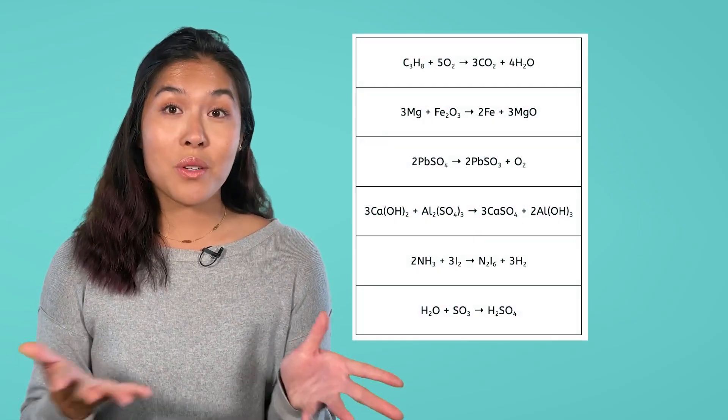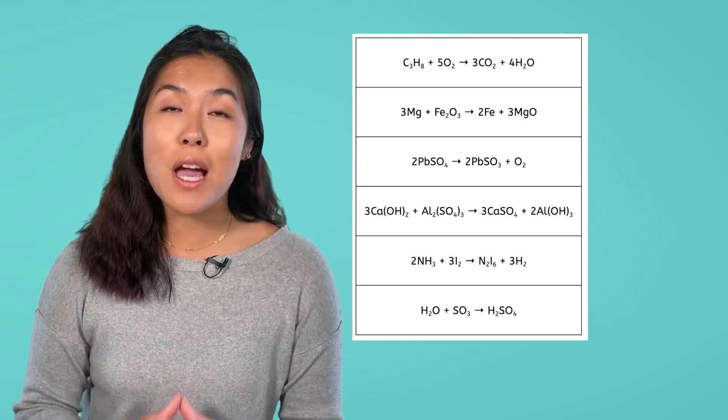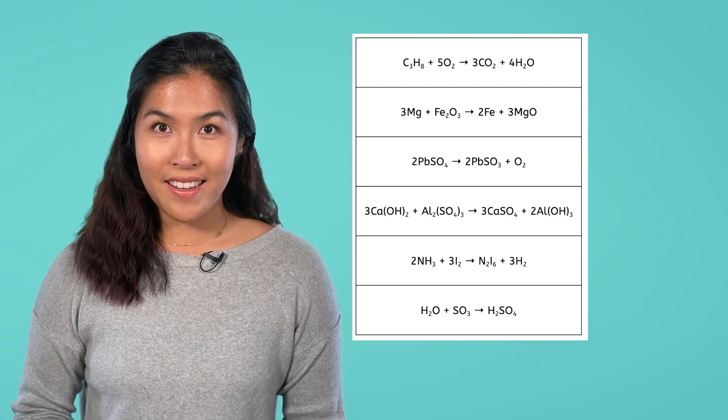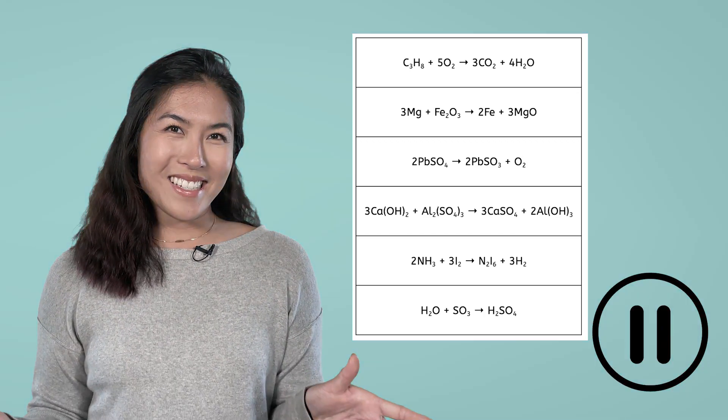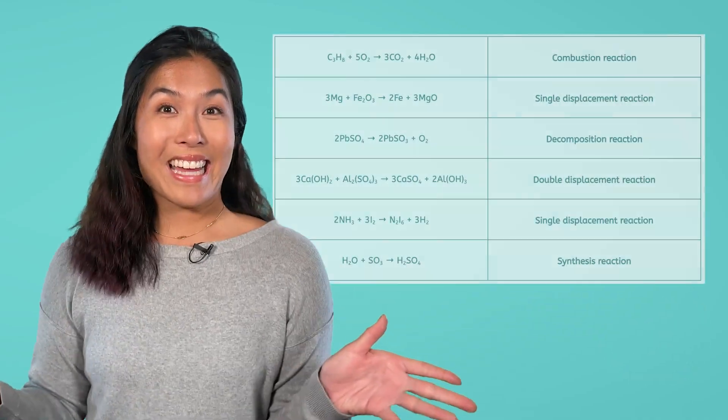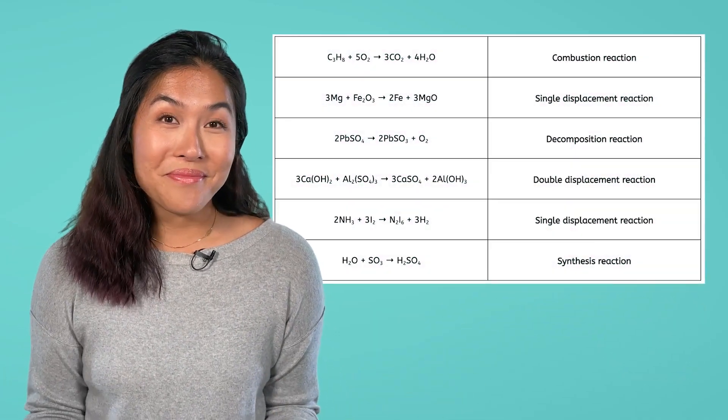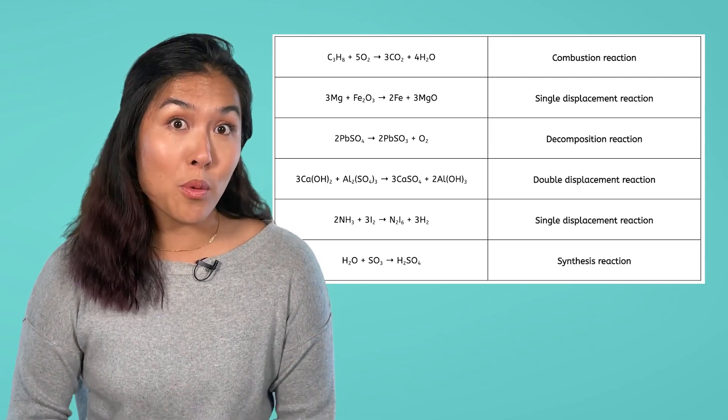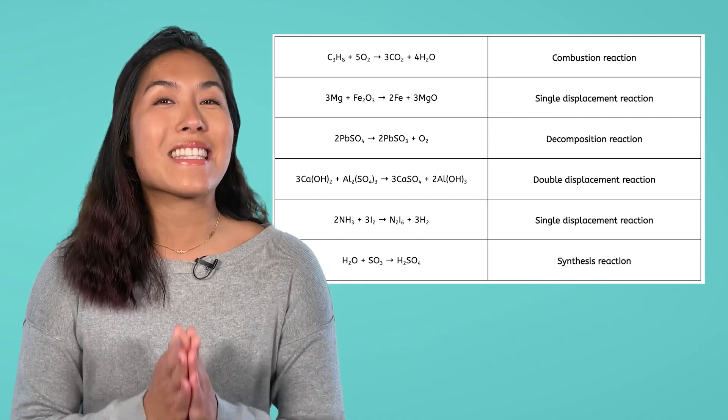Let's spend a few minutes practicing identifying the types of reactions. Look at these examples, which are also in your lesson PDF, and decide the type of reaction for each chemical reaction provided. Pause the video and try these examples out. Welcome back. Let's compare your answers to mine. How did you do? Don't worry if you're still having some trouble with this. You will have more opportunities to practice in the lesson PDF.